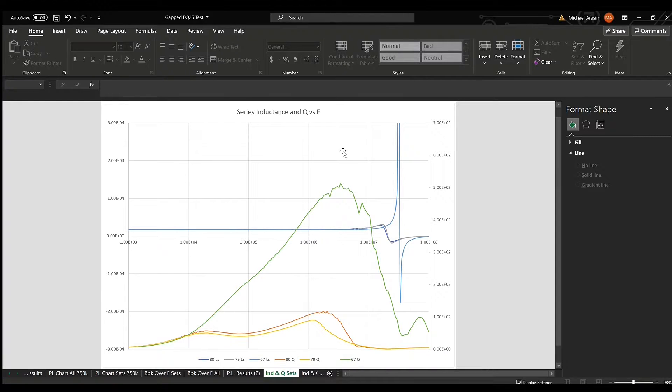All right, so the first chart we're going to look at here is our series inductance and quality factor over frequency that we measured on our impedance analyzer. So we could see here, this is plotted on two different scales. This one line, which is actually all three of our plots of our 80 material, 79 and 67 material EQ25 cores. This is a plot of the series inductance, so we could see that they all lay right on top of one another, so our gapping forced them to have all the same AL values for each set.